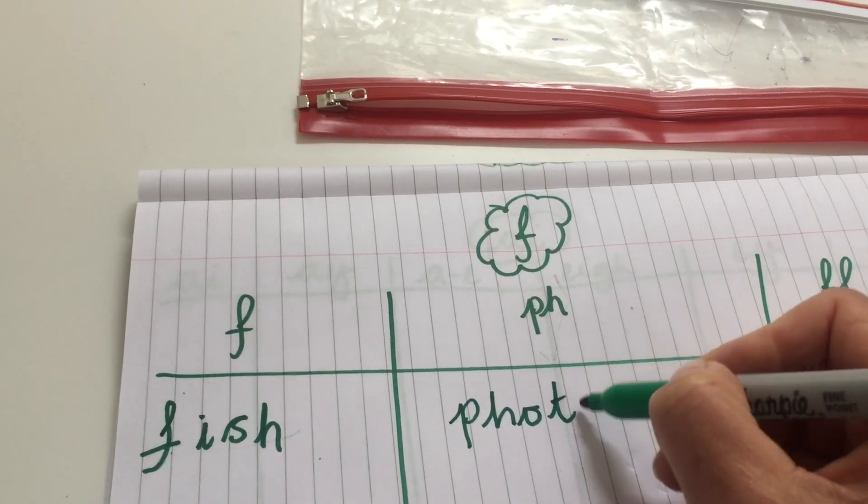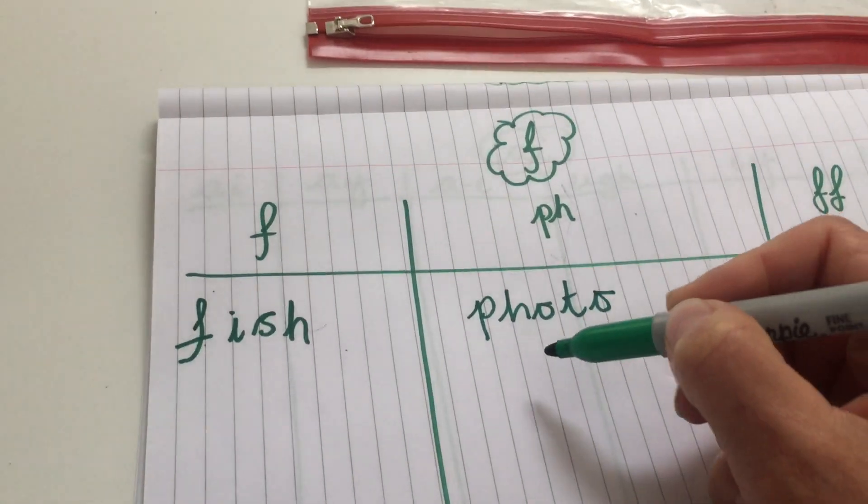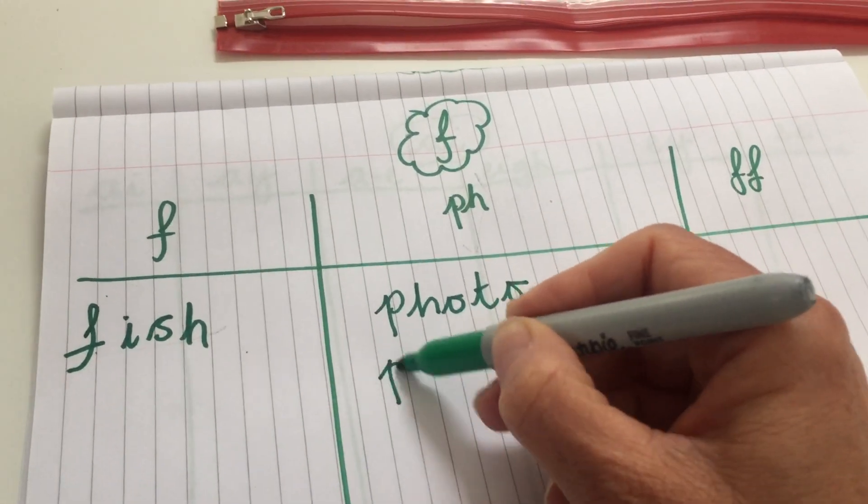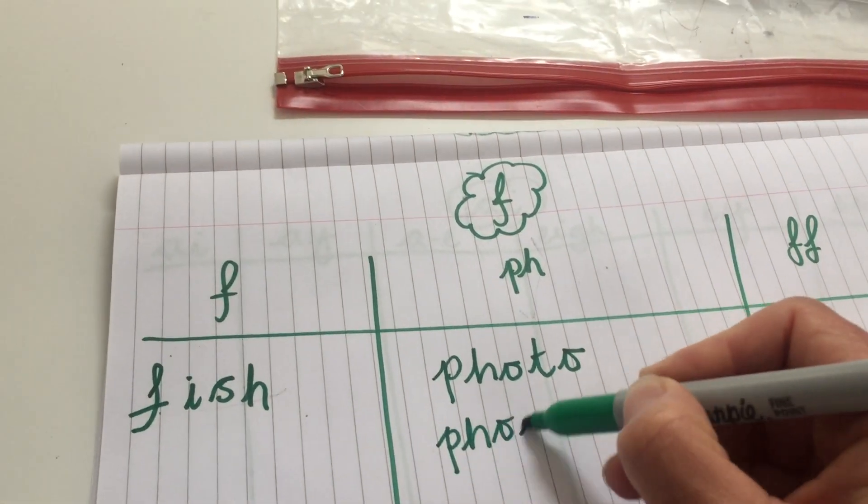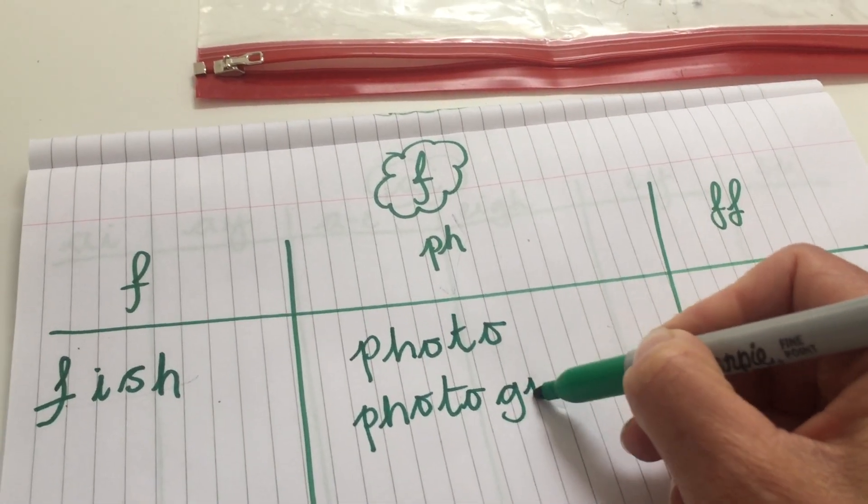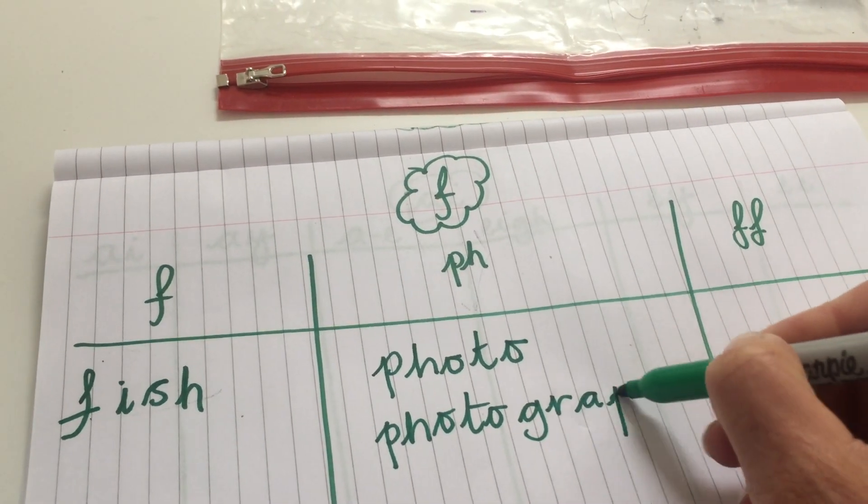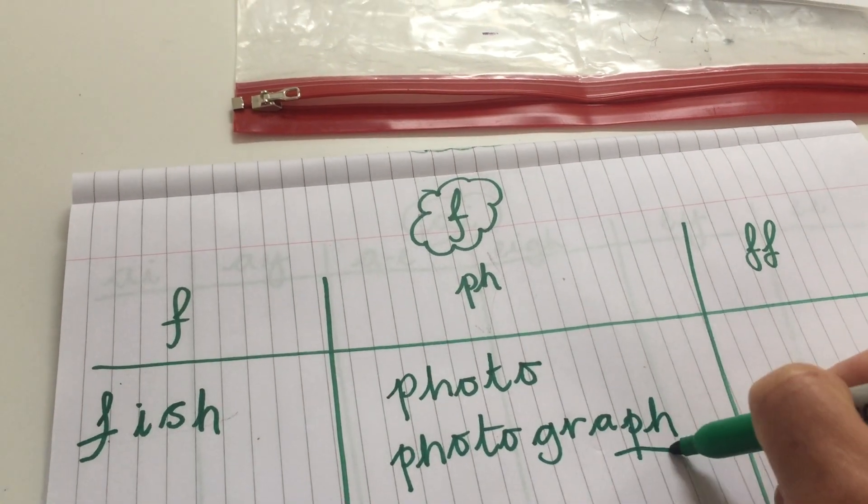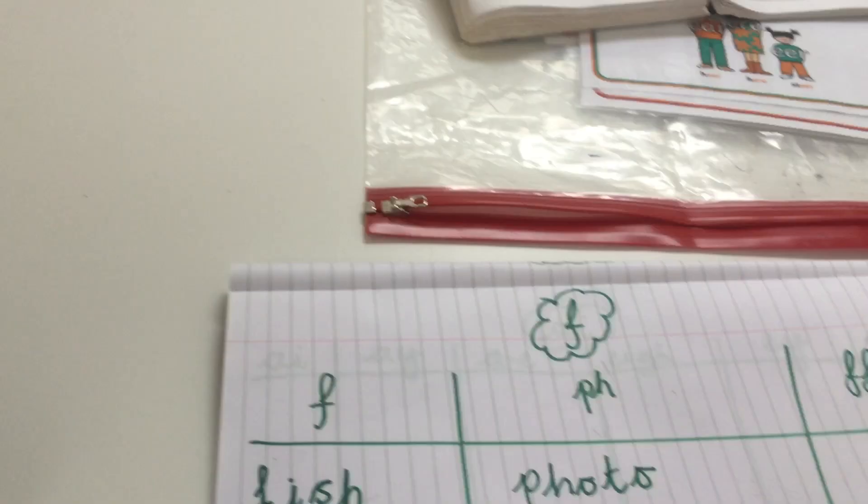Or we could write the word photograph: photo, and then we've got the graph, and we've got the F sound at the end. And again, that's the PH making that sound.